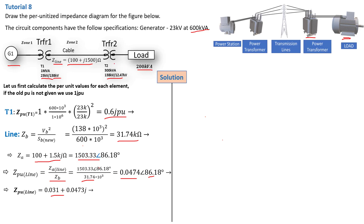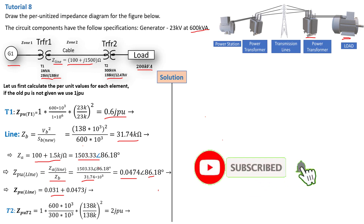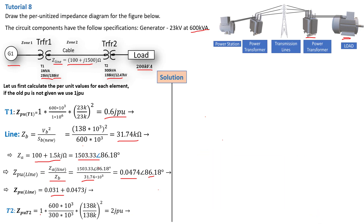Next we calculate the per unit of transformer two. Transformer two has an old apparent power of 300 kilovolt ampere, VB old is 138 kilovolt, and VB new is also 138 kilovolt for zone 2. Replacing into the formula for transformer two using 1 as the old per unit and substituting all values, we find the per unit value of transformer two is 2 per unit.